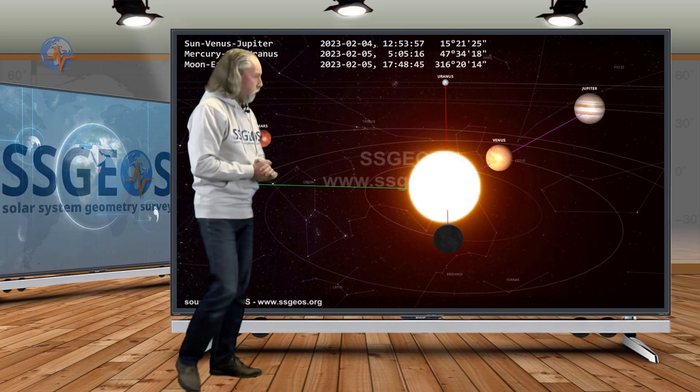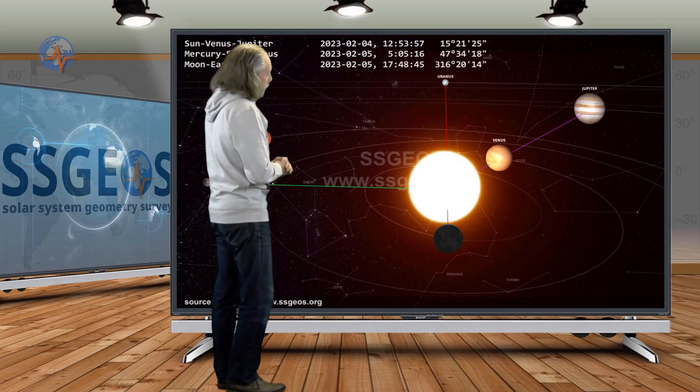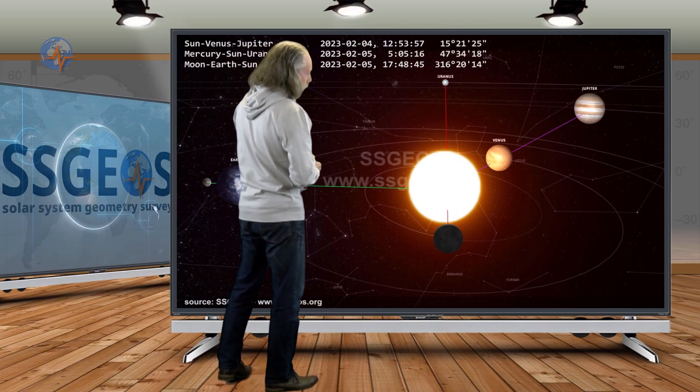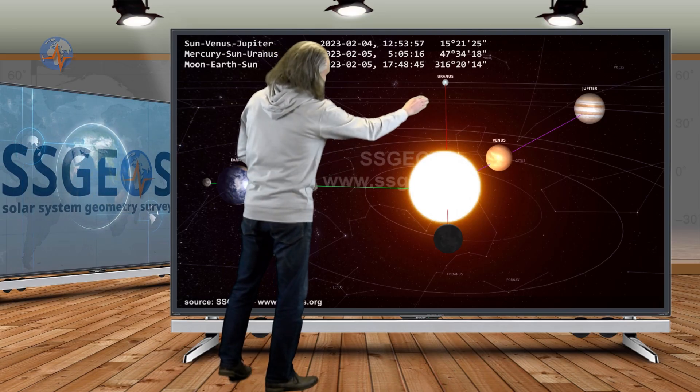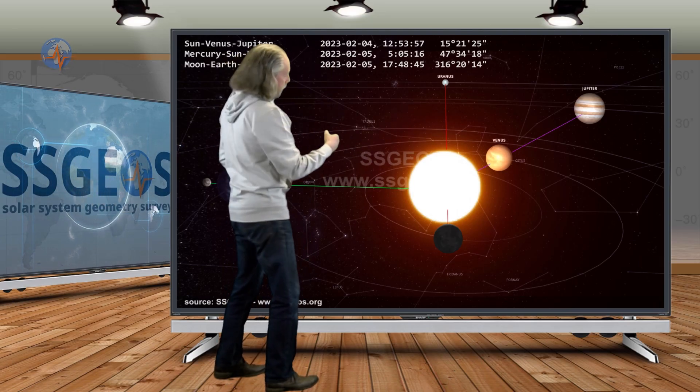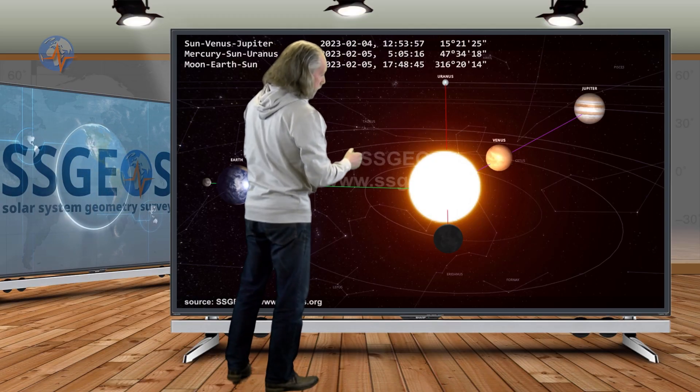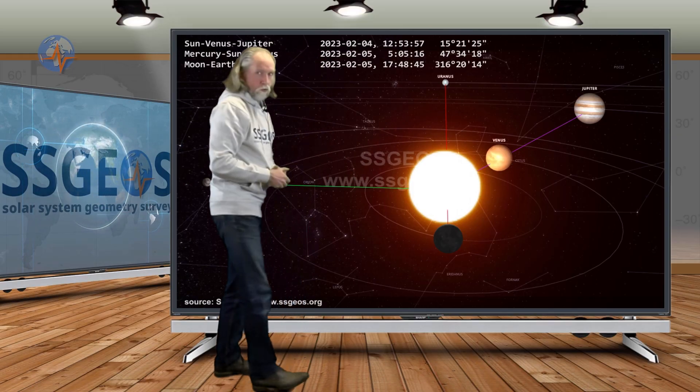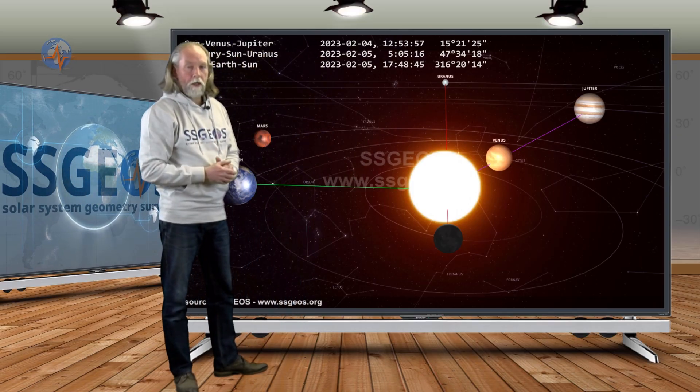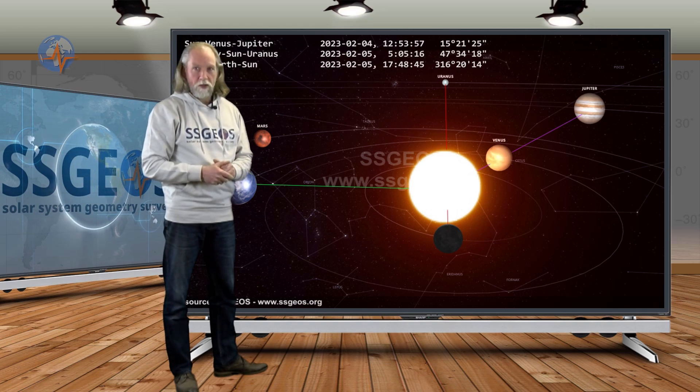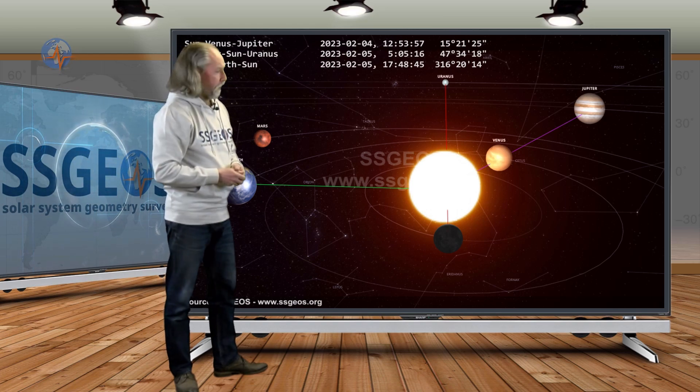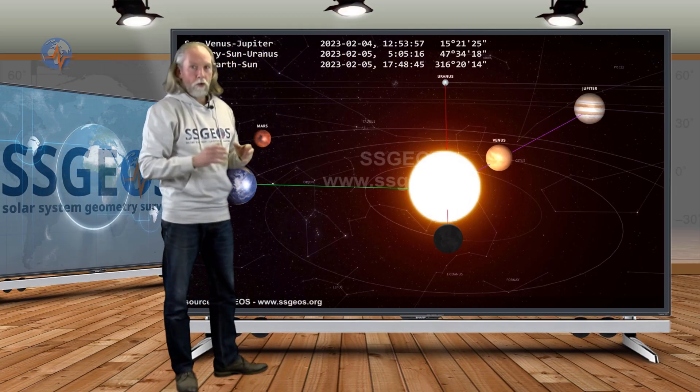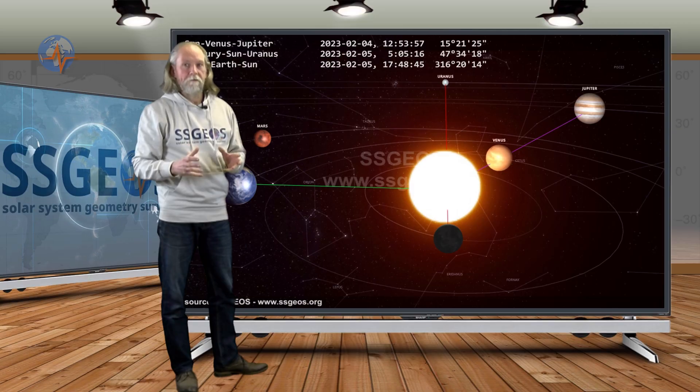If we look at the solar system we see the critical geometry primarily on the 4th and the 5th. On the 4th we have Sun, Venus and Jupiter in a conjunction, and then the next day, less than 24 hours later, we see Mercury, Sun and Uranus in a conjunction followed by a lunar conjunction with the Sun which is, in other words, a full moon. And I mark that here with the green line. And this is all coming together on the 4th and 5th of February.